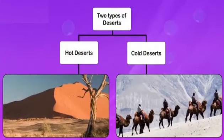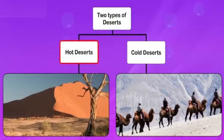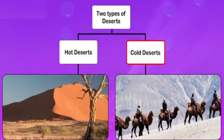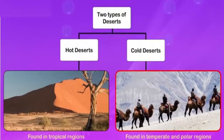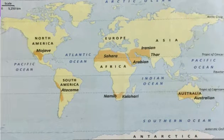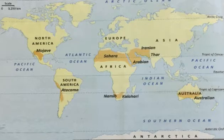There are basically two types of deserts: hot deserts and cold deserts. Hot deserts are found in tropical regions and cold deserts are found in temperate polar regions. Let us learn more about tropical or hot deserts.